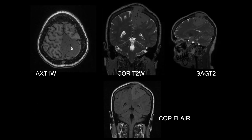There is an extra-axial lesion which is T1 iso-intense, T2 iso-intense, and slightly hyper-intense to adjacent gray matter. There are multiple flow voids in the lesion, and the lesion is causing compression over the adjacent frontoparietal gray matter, with extension of the lesion into the adjacent bone and extra-cranially into the scalp.